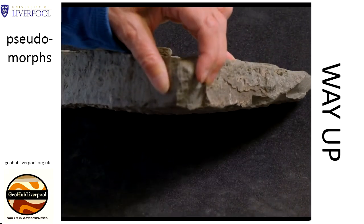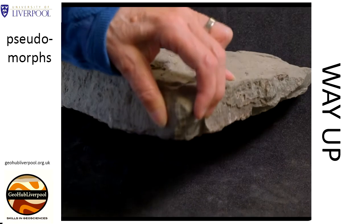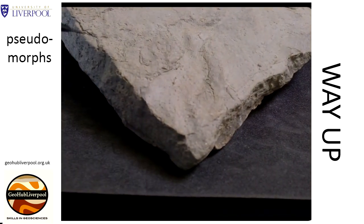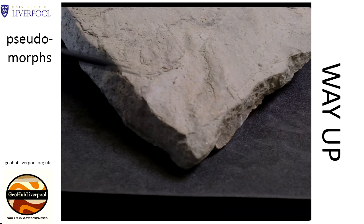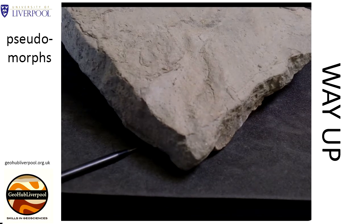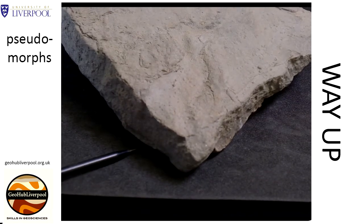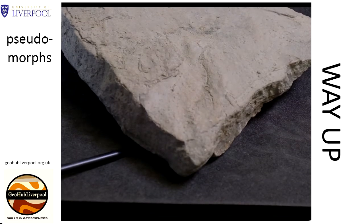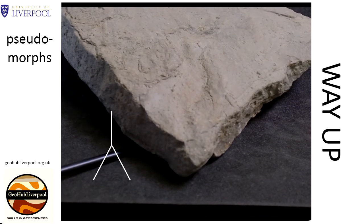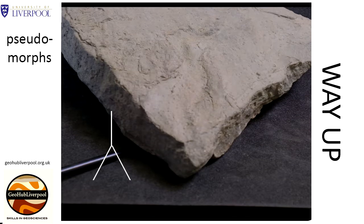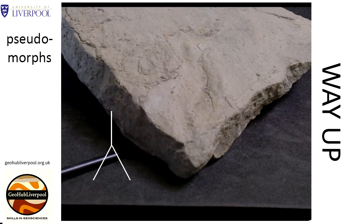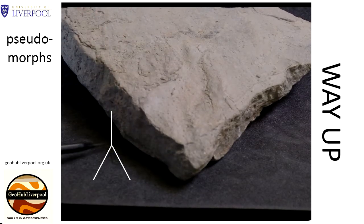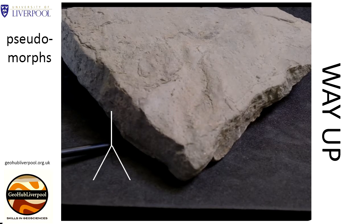This view shows the base of the rock sample. Here the sample is being tilted to its original orientation. The top of the bed is shown here, and the pseudomorphs are at its base. In the field, if you are recording way-up on a sketch of this sedimentary structure, you would indicate the younging direction with this symbol.